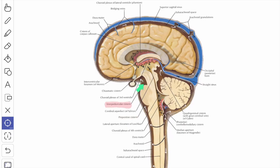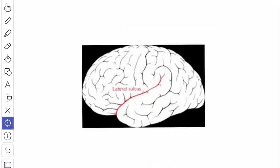Next, we will see about the interpeduncular cistern, also called cisterna basalis. It overlies the interpeduncular fossa and contains the arterial circle of Willis. The next space is the cisterna ambiens or quadrigeminal cistern, which is the space between the splenium of the corpus callosum and the tectum of the midbrain; it contains the great cerebral vein of Galen. The last cistern is the cisterna of the lateral sulcus, which contains the middle cerebral artery and the superficial and deep middle cerebral veins.